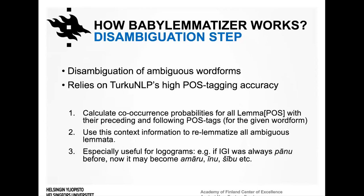The next step assigns lemmatizations to ambiguous word forms by calculating co-occurrence probabilities for lemmas and POS tags that immediately precede and follow them in the training data. This is a reliable approach since Turku NLP achieves about 97% POS-tagging accuracy for Akkadian. This step not only helps guess the best lemma for ambiguous forms based on context, but also confirms that low-ambiguity words exist in previously seen contexts — important for logograms, whose lemmatizations depend heavily on context. For example, a logogram depicting an eye could be read as 'pānu' (front), 'amāru' (to see), 'īnu' (eye), or 'šību' (witness), depending on context.